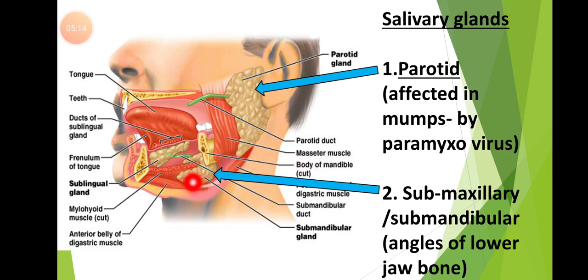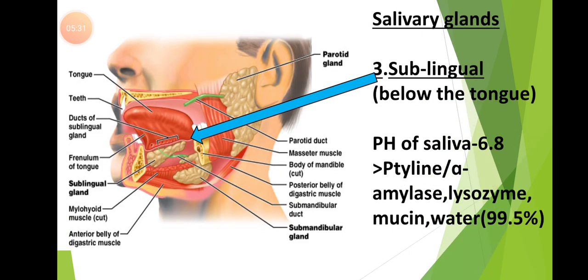The submaxillary glands, also called submandibular glands, are present at the angles of the lower jawbone. Coming to the third type of salivary gland — the sublingual gland — it is present below the tongue. That is why it is called the sublingual gland.